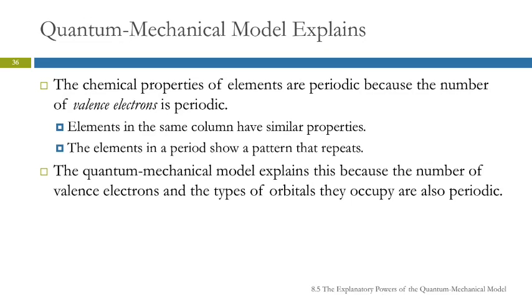Elements in the same column have similar properties because they have the same number of valence electrons. The valence electrons are occupying the same type of orbitals in each case, and that's what gives them their similar properties.